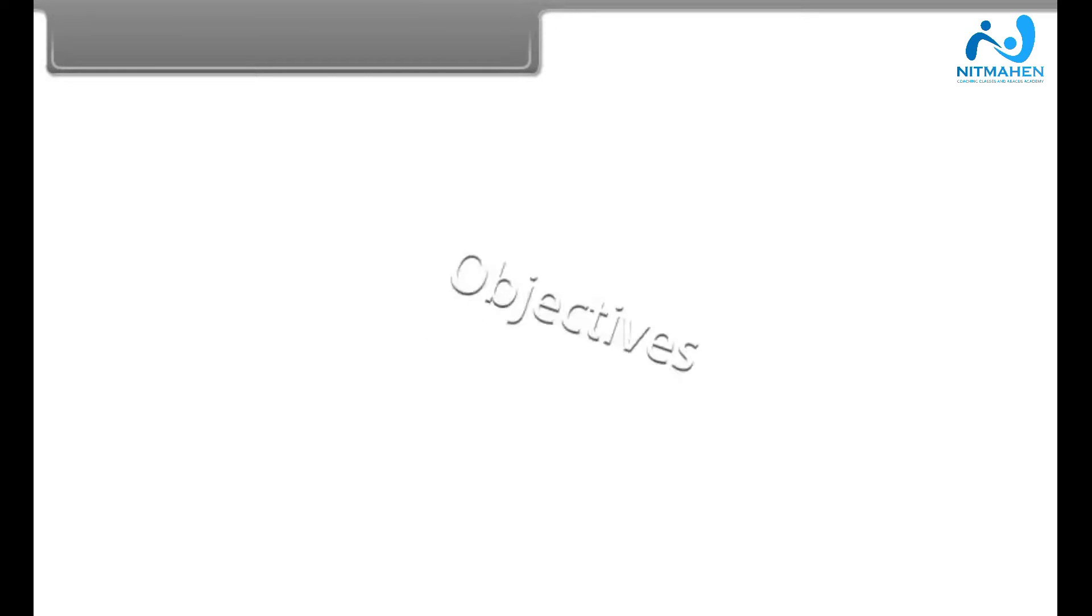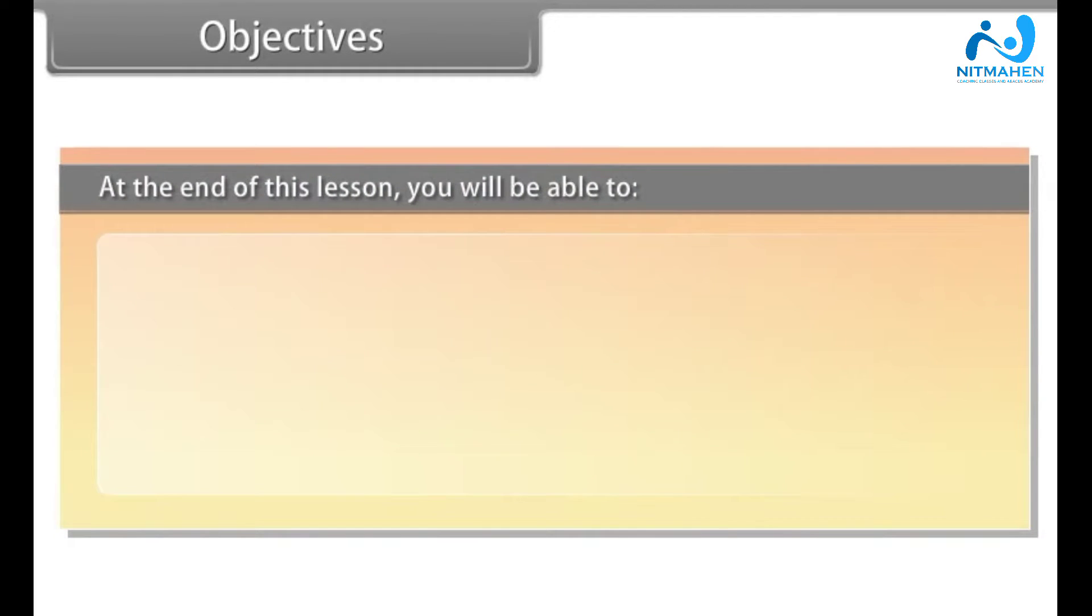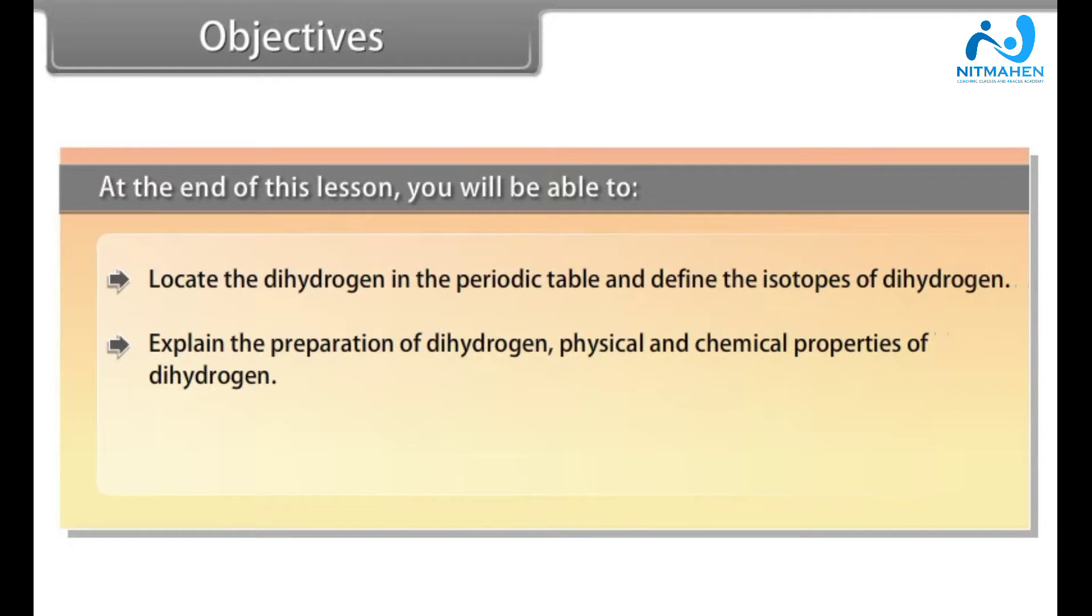Objectives. At the end of this lesson you will be able to locate the hydrogen in the periodic table and define the isotopes of hydrogen, explain the preparation of dihydrogen, physical and chemical properties of dihydrogen, and explain hydrides.